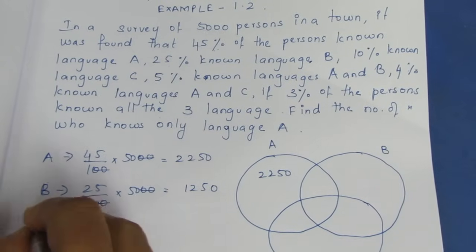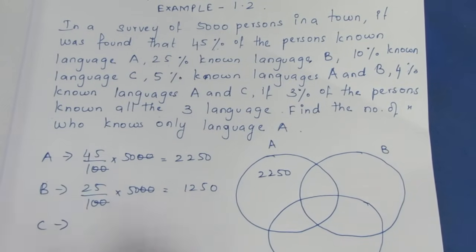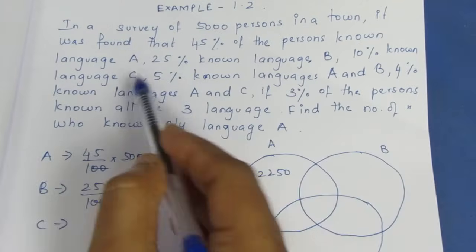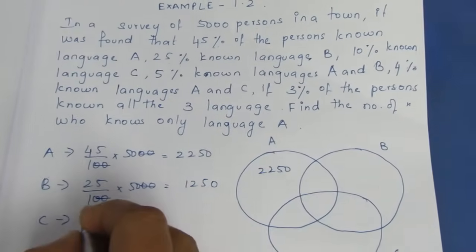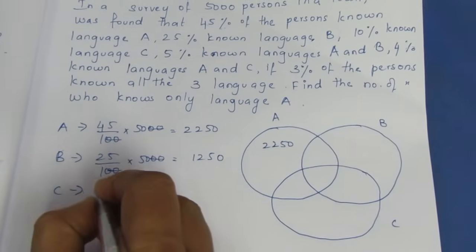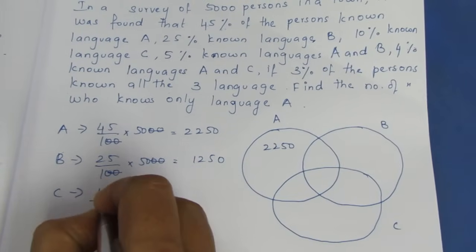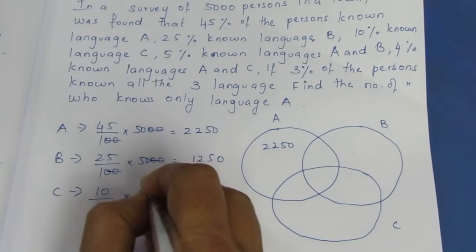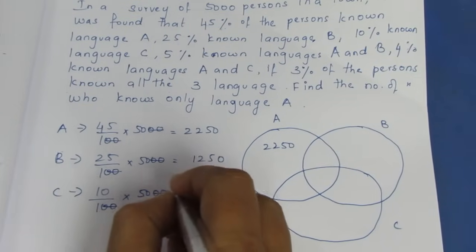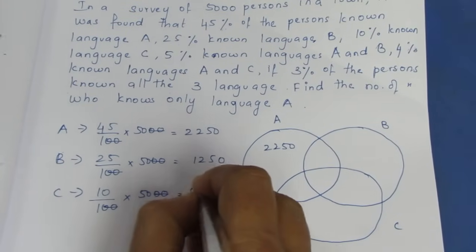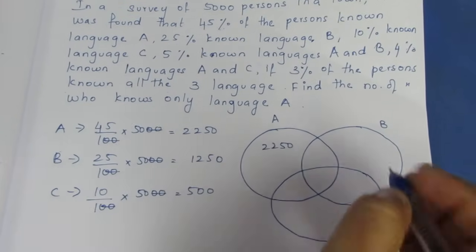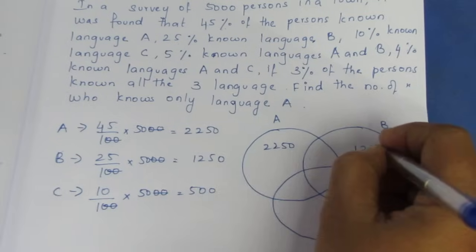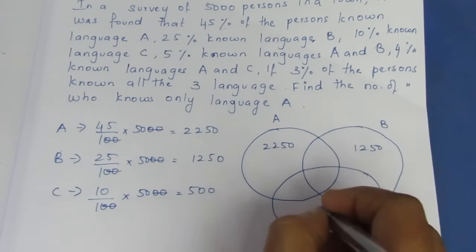Now, C is 10% known language. So 10% is 10 divided by 100 into 5000. C is 500.